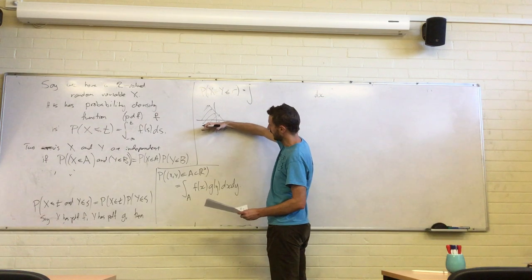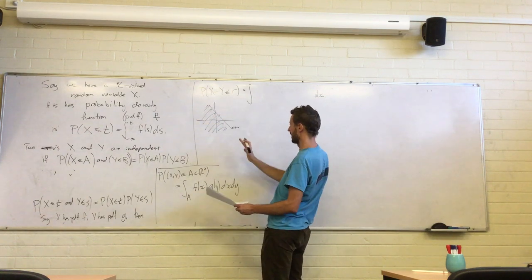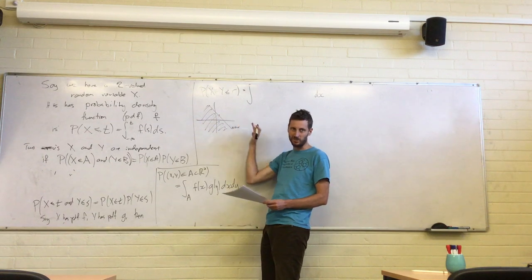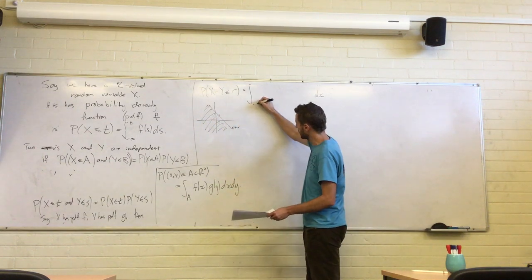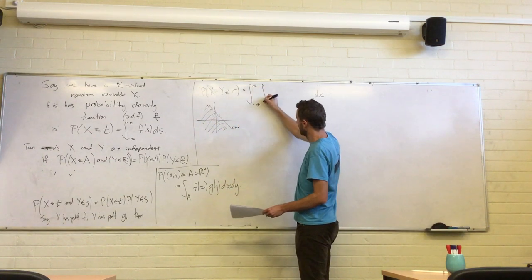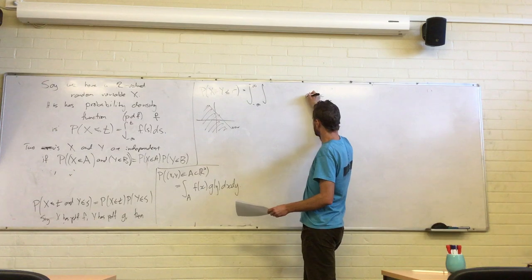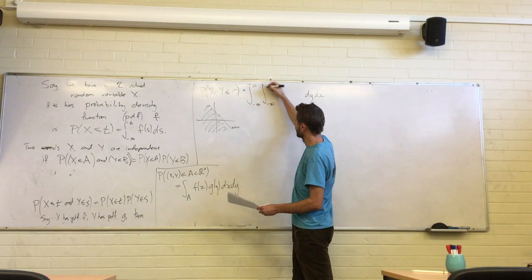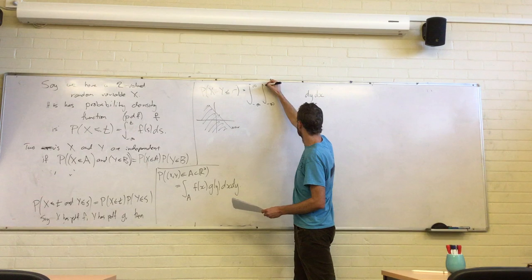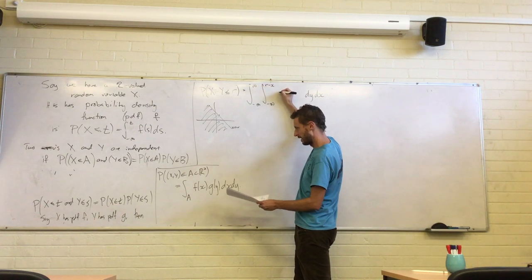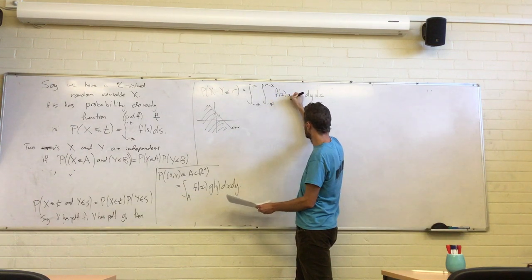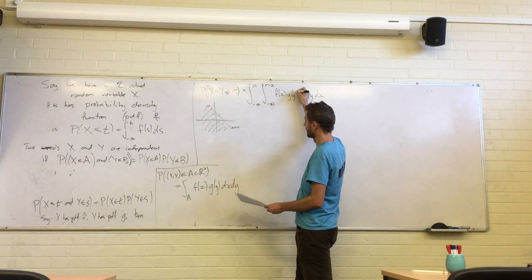If we're doing the x coordinate first, for every possible x coordinate, x goes from minus infinity to infinity. And once you've fixed x and you're doing y, you have to go from minus infinity to r minus x. Then it's f(x) times g(y).